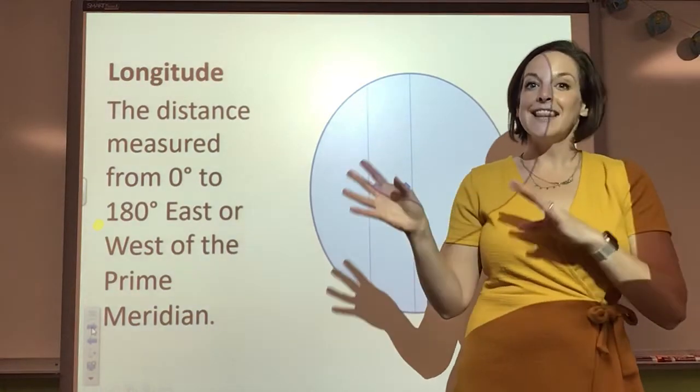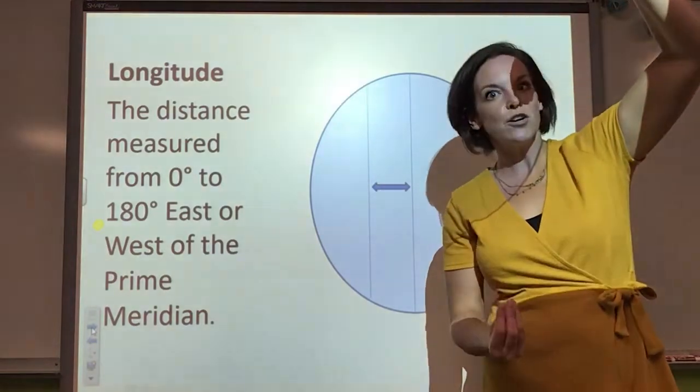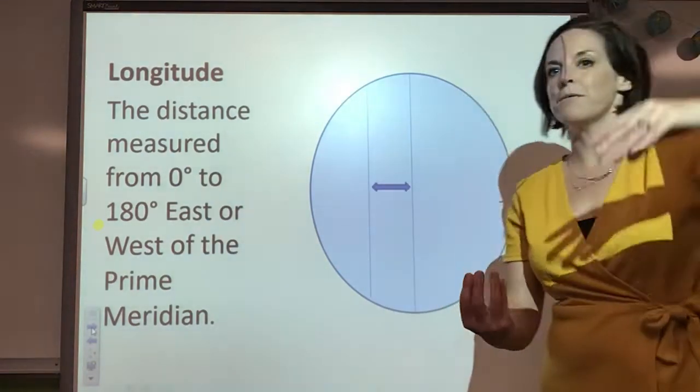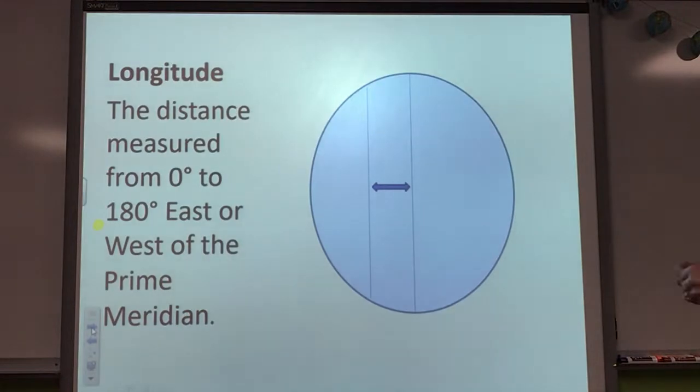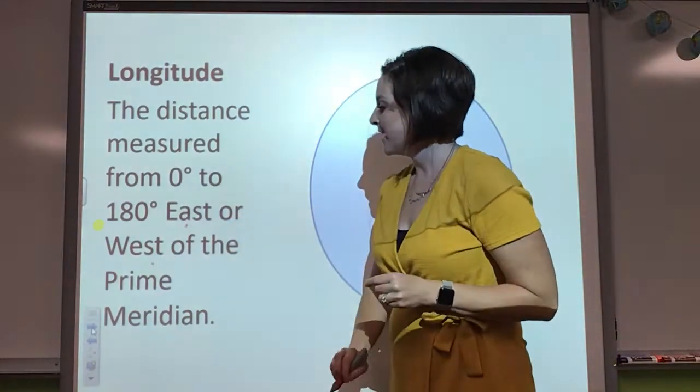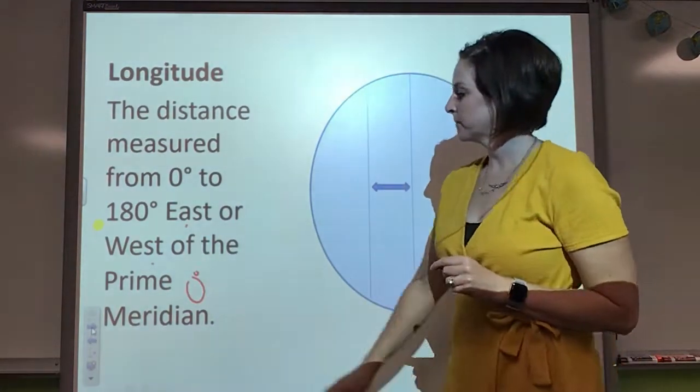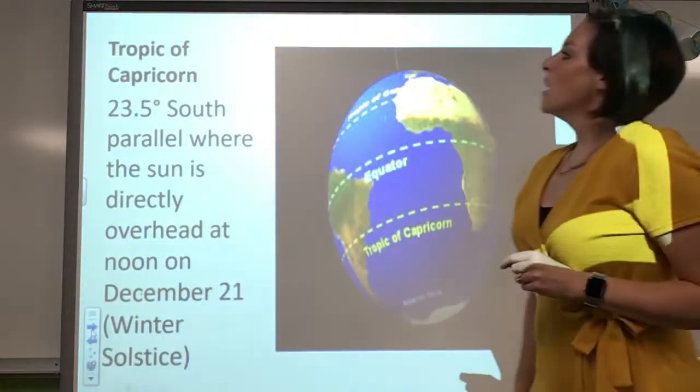So latitude, I think the ladder, north and south. Longitude, I think the longer the lines, they wrap around zero to 180, east and west. And then, again, the prime meridian is our zero degrees.